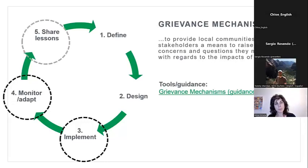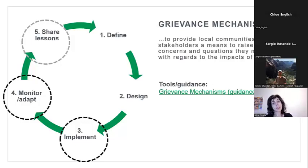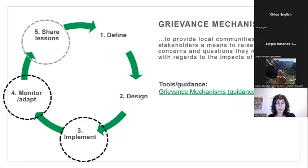At FFI we have grievance mechanism guidance that projects use to develop their mechanisms. The challenge is that different funders sometimes have different guidance to reconcile with ours, though the principles are more or less aligned. We're trying to roll out a grievance mechanism across all our projects. It can be implemented at the project level, but preferably at the landscape level — so one grievance mechanism covers potential problems at that broader scale.